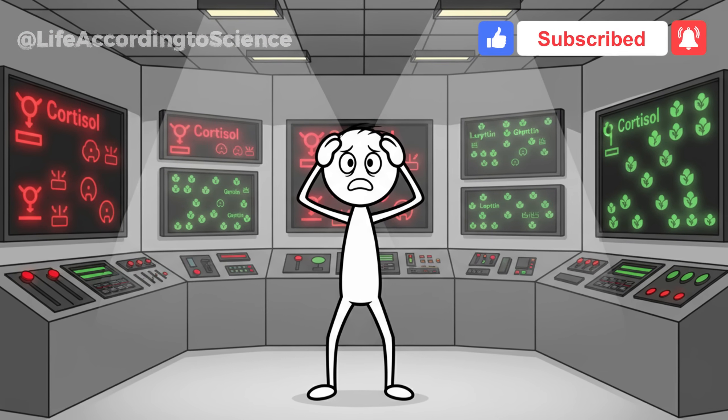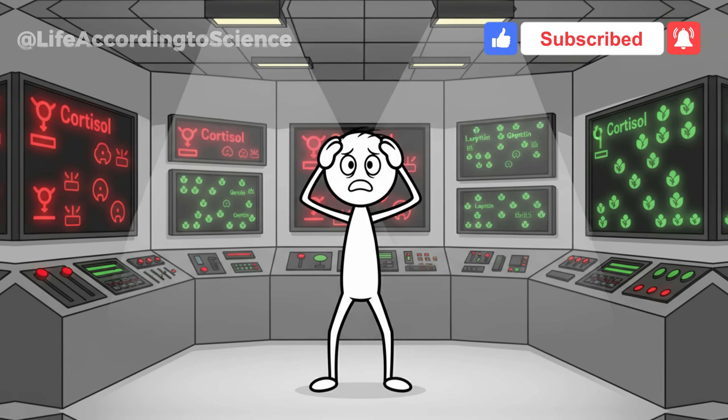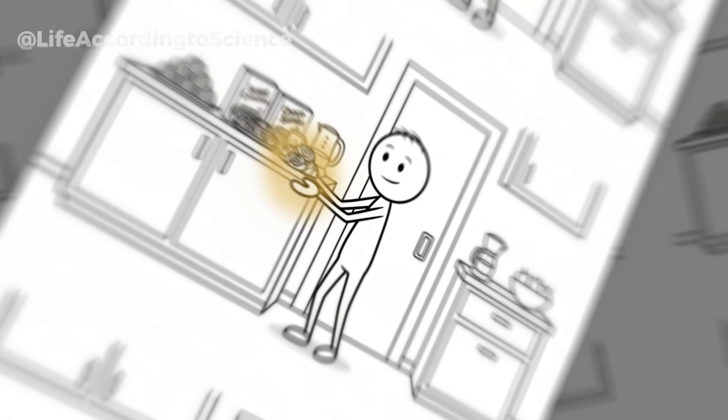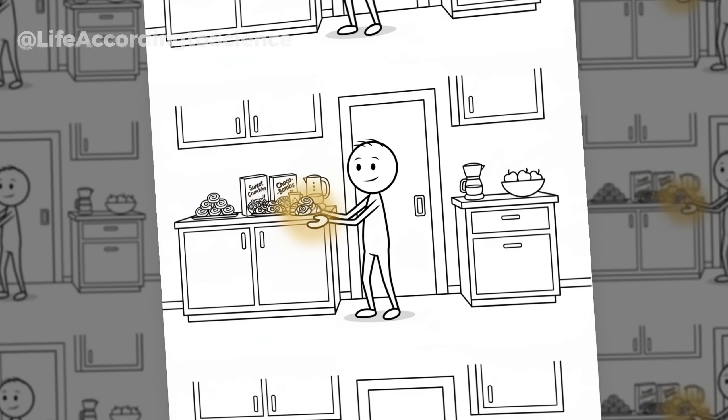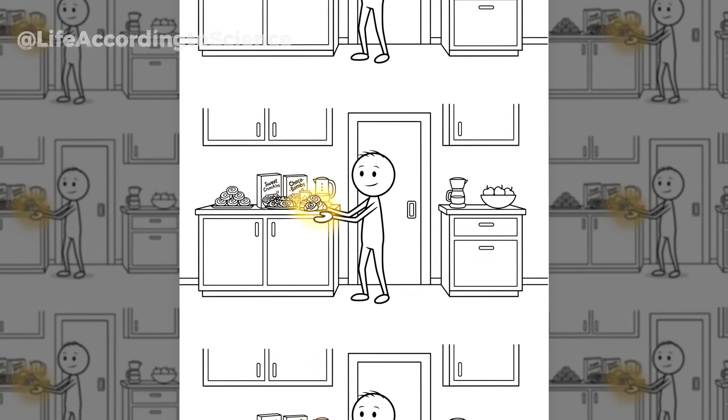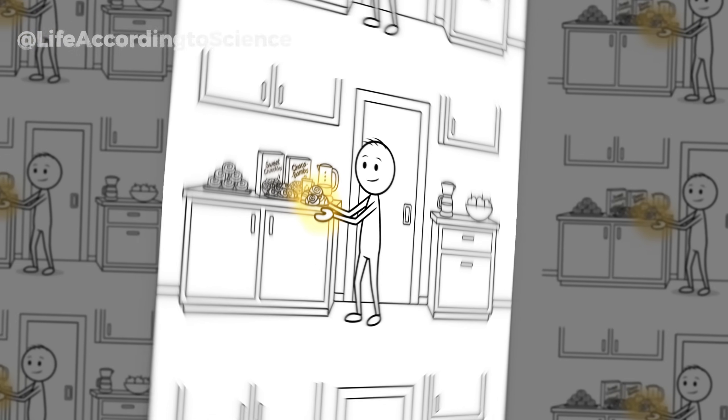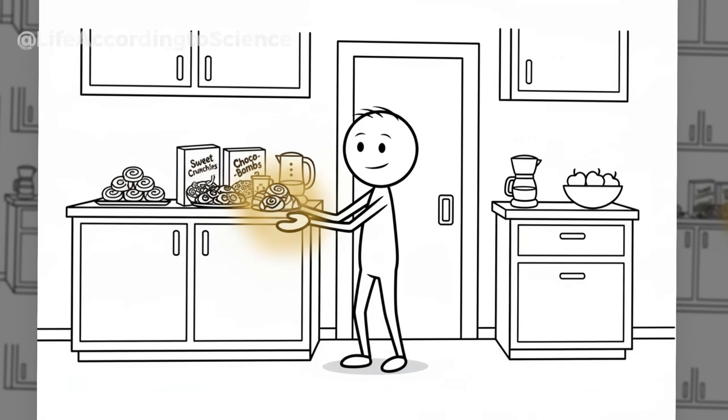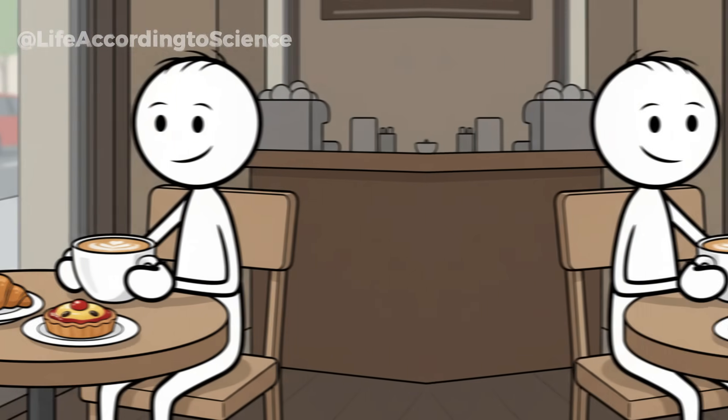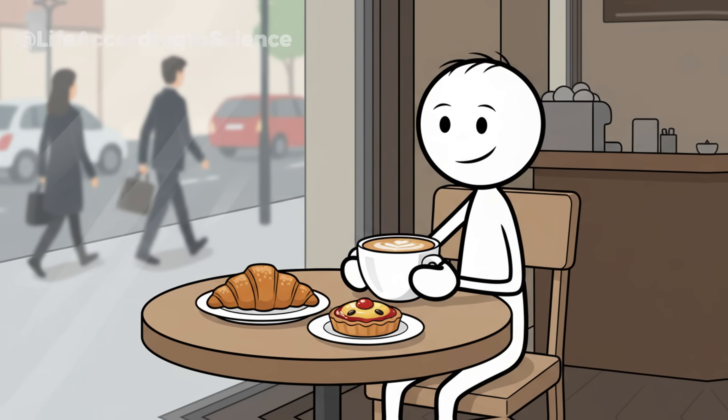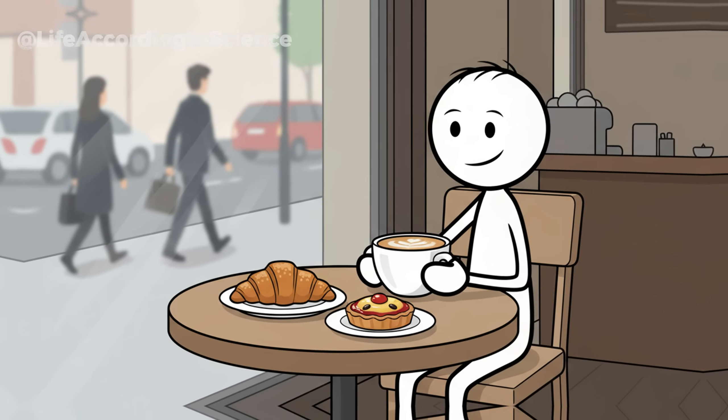But when you don't get enough rest, everything flips. Cortisol rises, ghrelin, the hunger hormone, goes up, and leptin, the satiety hormone, crashes. This hormonal chaos tricks your brain into craving quick energy the next day: sugar, carbs, caffeine, anything that feels comforting and fast.